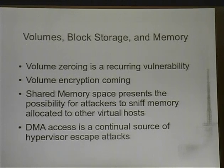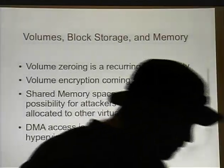Volumes, block storage, and memory are recurring problems in cloud. People forget to zero volumes, and code for zeroing volumes gets accidentally removed during development — this recently happened in the Grizzly development cycle. Early Nova didn't zero volumes, and Amazon didn't either for a while. Volume encryption is coming in Grizzly, so you can have an encrypted volume at rest. Shared memory space is also a risk — people have been polling over-allocated memory locations and pulling up other users' chunks of memory, depending on the hypervisor and cloud.